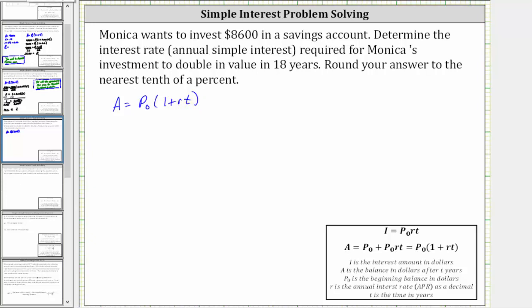Let's list all the given information. Monica wants to invest $8,600, and therefore P sub zero is 8,600.